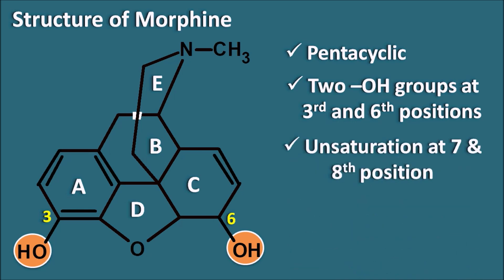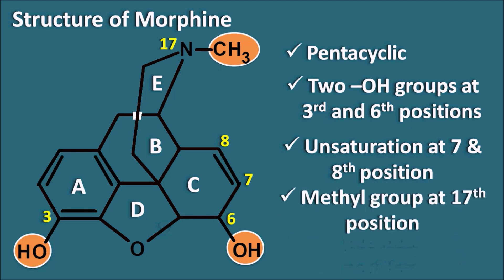The morphine structure has an unsaturation at the seventh and eighth positions — a double bond is present between the seventh and eighth positions. Finally, morphine has a methyl group at the nitrogen (17th position). These are the common structural features of morphine, and when these are modified, it produces many types of opiate analogs.